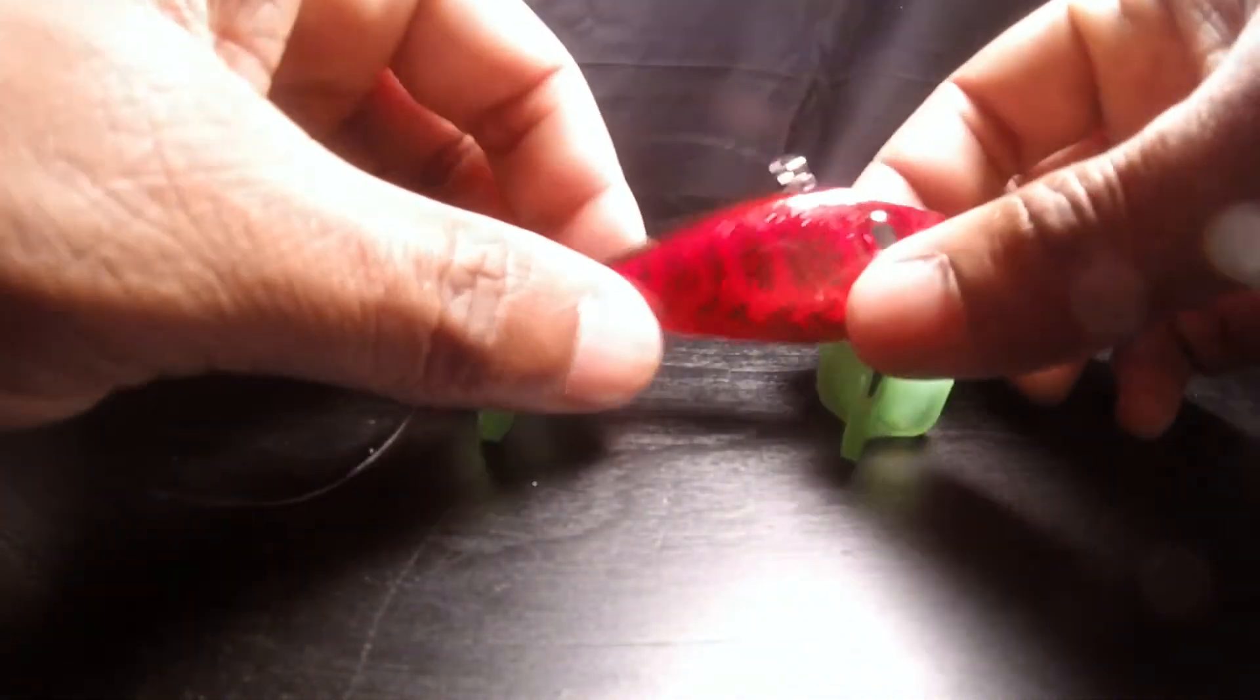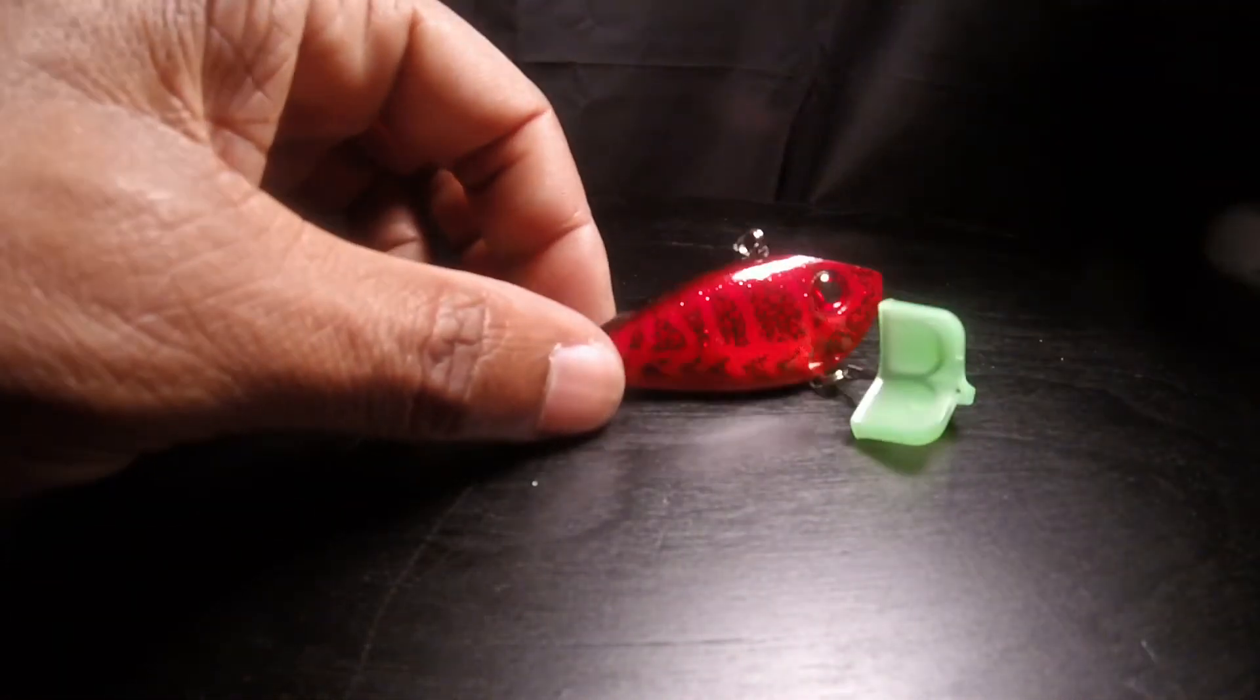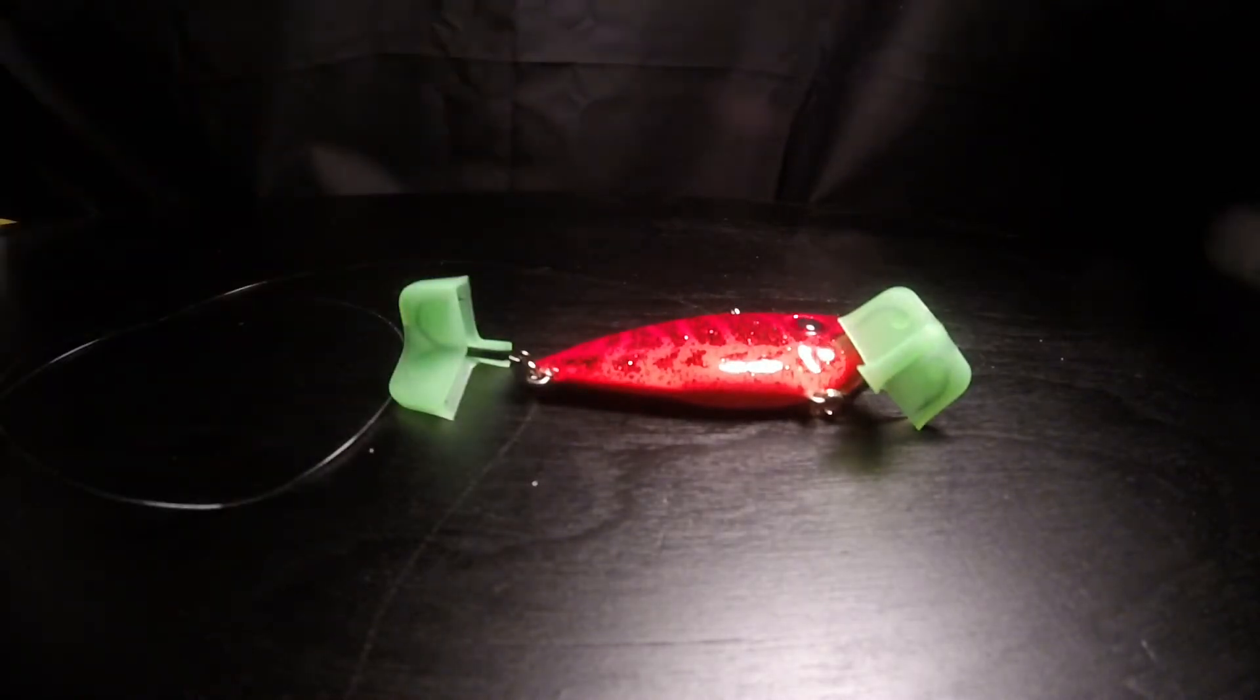Another knot tutorial, how to tie the Clench knot. As always, thanks for watching. Like, comment, subscribe. Thanks for watching an episode of East Coast Bass Fishing. Peace.